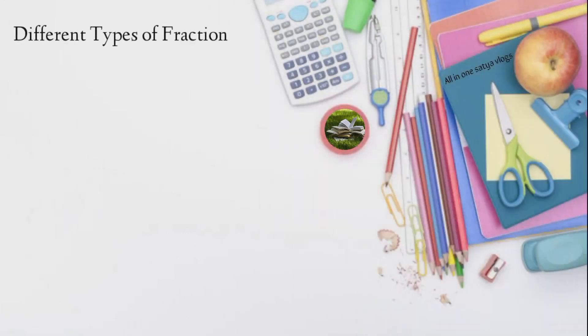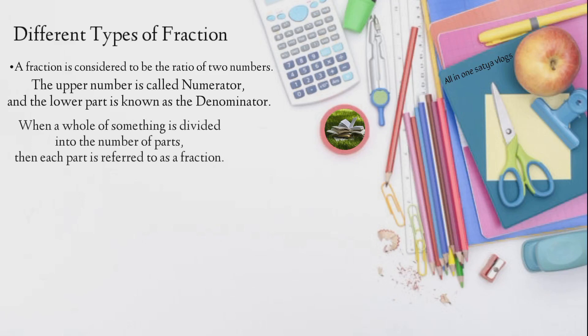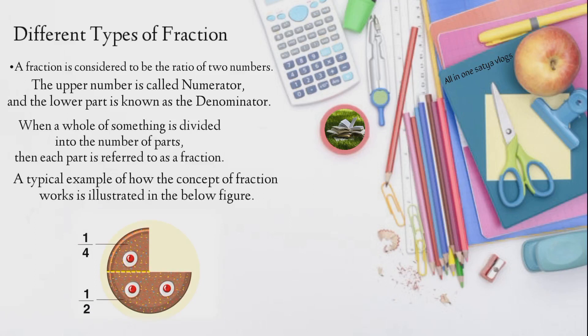Different types of fractions. A fraction is considered to be the ratio of two numbers. The upper number is called numerator, and the lower part is known as the denominator. When a whole of something is divided into the number of parts, then each part is referred to as a fraction. A typical example of how the concept of fraction works is illustrated in the below figure.